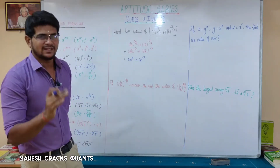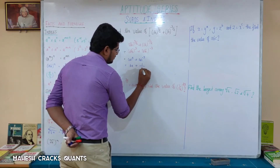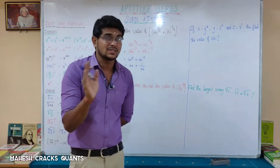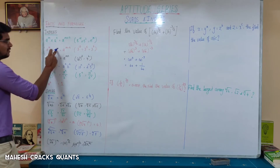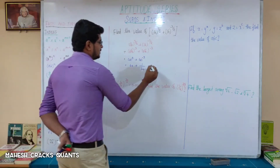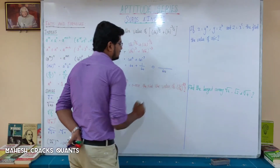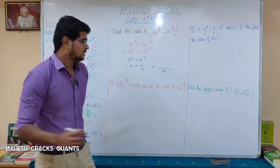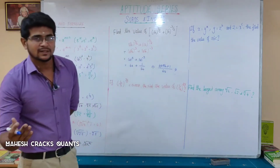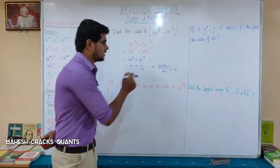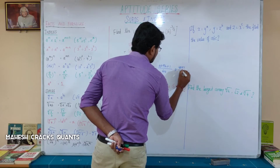Now, 4 power minus 3 means 1 by 4 cube — we don't keep the minus, we write it in the denominator. So the value of 4 cube is 64. Therefore we get 64 plus 1 by 64. Adding these two gives us 64 squared plus 1, all over 64. 64 squared is 4096, so we have 4096 plus 1 over 64, which equals 4097 divided by 64.